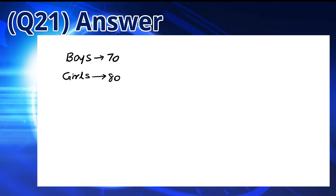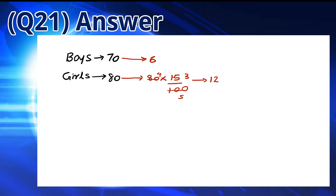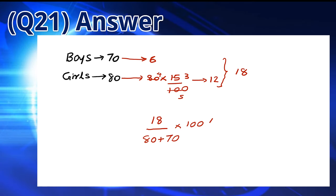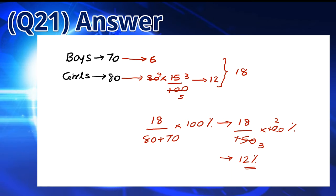There are 70 boys, 6 of them are prize winners. There are 80 girls and 15% of them are prize winners. 15% of 80 is 12. Altogether, there are 18 students who are prize winners. To calculate the percentage, we have to divide 18 by the total number of students, which is 150, and multiply it by 100. This gives us a percentage of 12. So the answer is B.